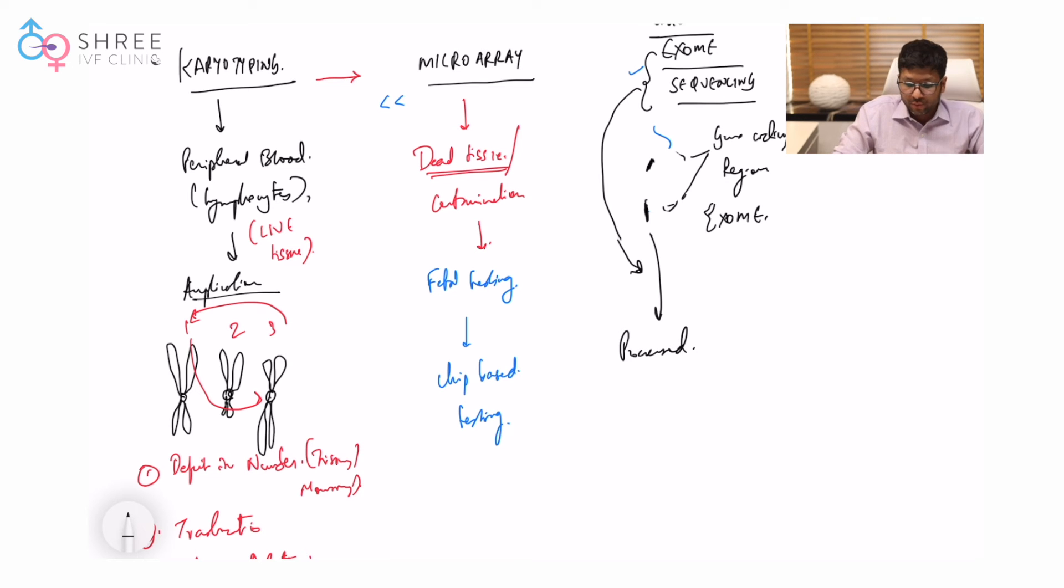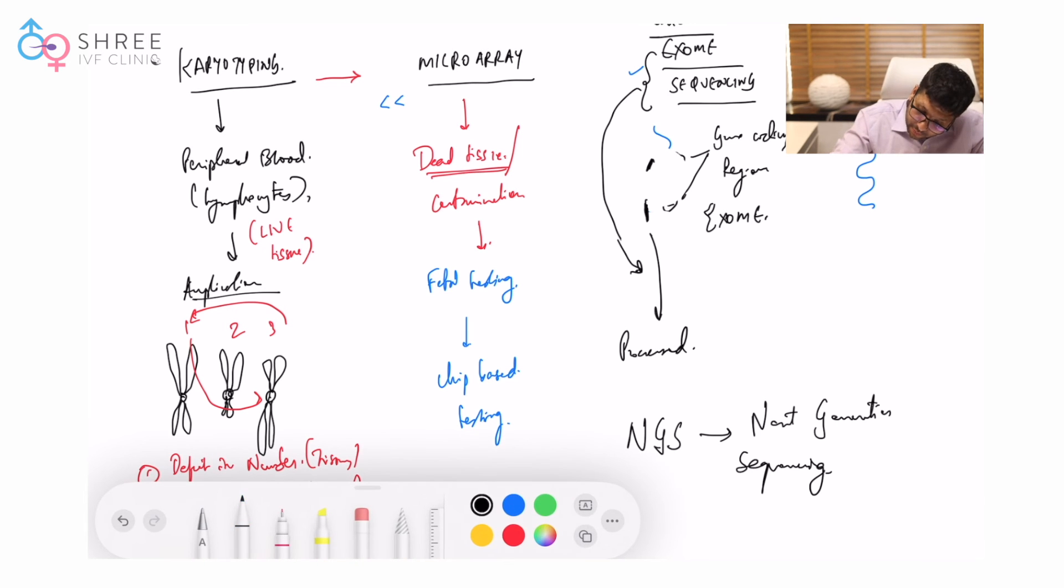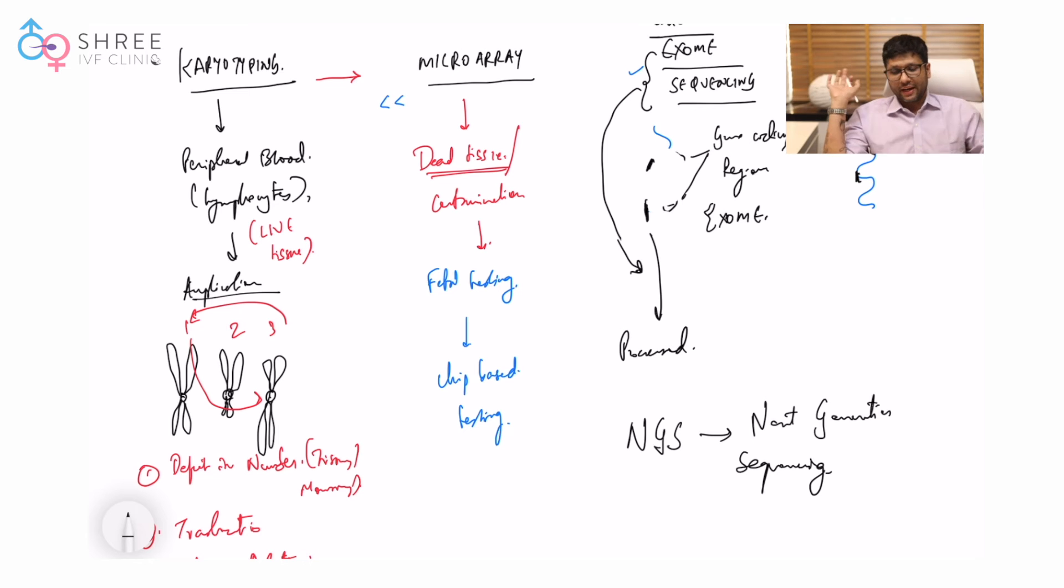The best platform people use these days is NGS - next generation sequencing. There are machines to do these things and kits available based on what you want to test. What is whole genome sequencing then? Whole genome sequencing means you don't want only the exomic region. If this is the entire gene and these are regions coding for protein, you don't care - you want the entire genome sequenced. That is also tested on next generation sequencing.